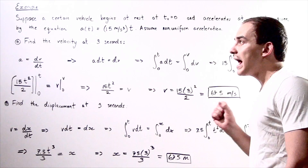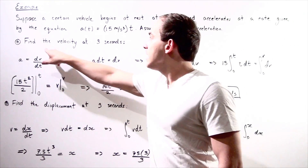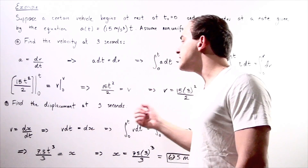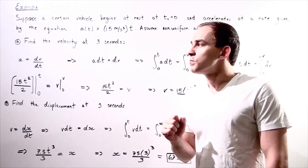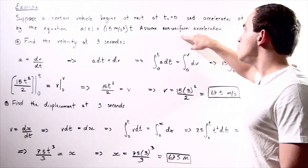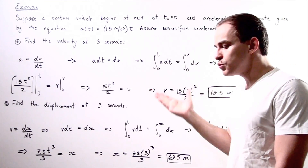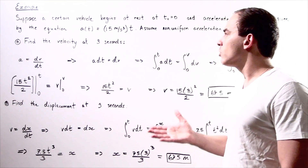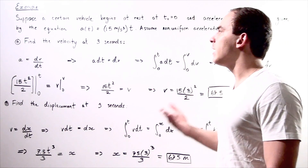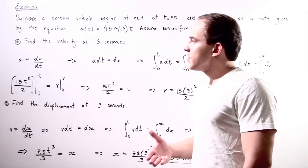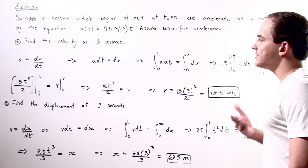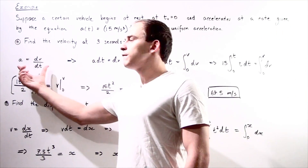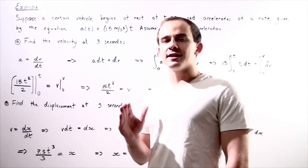Knowing that, we want to find: A) the velocity at three seconds, and B) our displacement at three seconds. Because we have non-uniform acceleration, we can't use our four formulas for uniform acceleration, so we have to find it another way — by taking the integral of both sides of our formula for instantaneous acceleration.